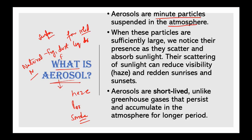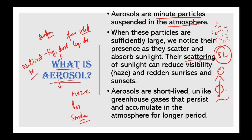These particles get into the atmosphere in large quantities. From their suspension in the atmosphere, they get scattered and they absorb sunlight — the sunlight coming toward Earth — they absorb it along the way. And because of scattering of sunlight, visibility is reduced, which we call haze. This is also the reason that during sunrise and sunset you can see a lot of red color and red wavelengths.